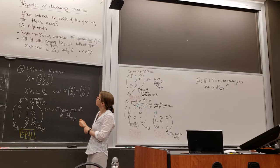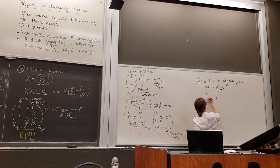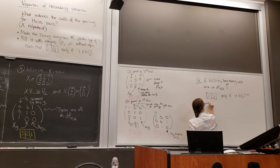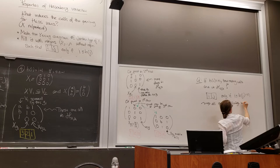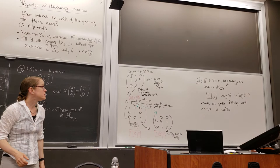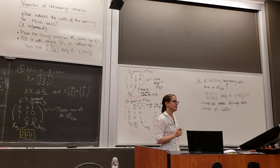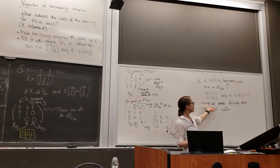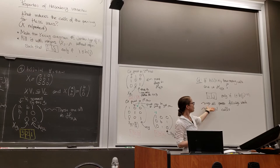Quick question: if h of i equals n for everything, then how many cells are there? The condition is i next to j only if i is less than or equal to h of j equals n, which is always satisfied. So all possible fillings work — that's n factorial cells, consistent with the fact that regardless of x, this is the full flag variety.